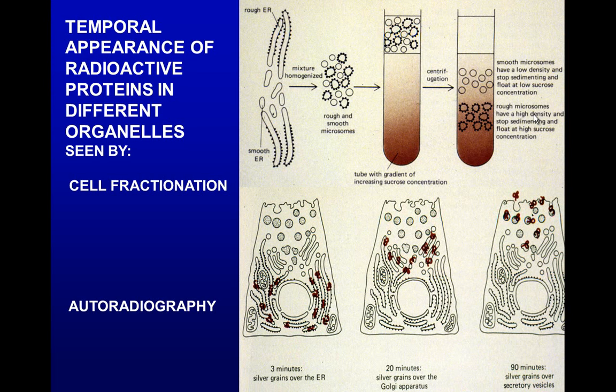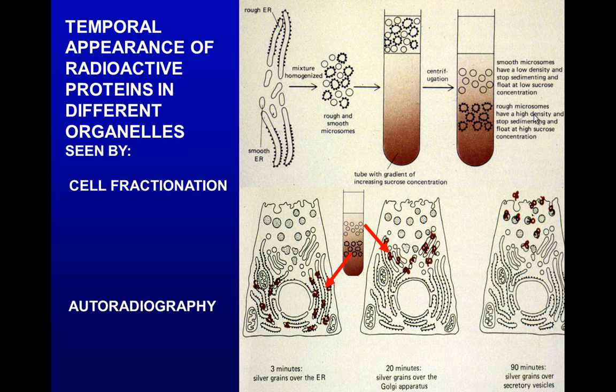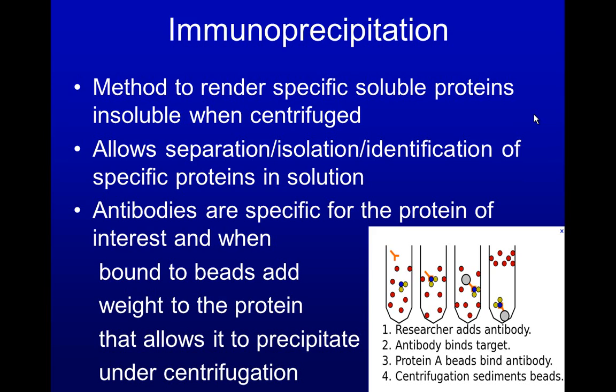Here we see the comparison between the autoradiography done on the piece of tissue itself and the cell fractionation. When cell fractionation was done, radioactivity was found in the rough endoplasmic reticulum at about three minutes. Twenty minutes later it was no longer in the rough endoplasmic reticulum but had moved to the Golgi apparatus, again illustrating the pathway of first rough endoplasmic reticulum then Golgi apparatus in protein secretion.